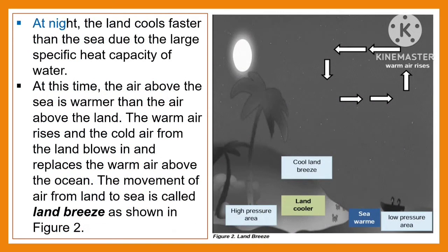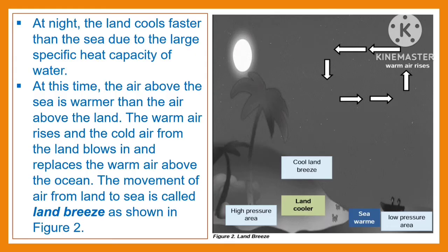At night, the land cools faster than the sea due to the large specific heat capacity of water. At this time, the air above the sea is warmer than the air above the land. The warm air rises and the cold air from the land blows in and replaces the warm air above the ocean. The movement of air from land to sea is what we call the land breeze.